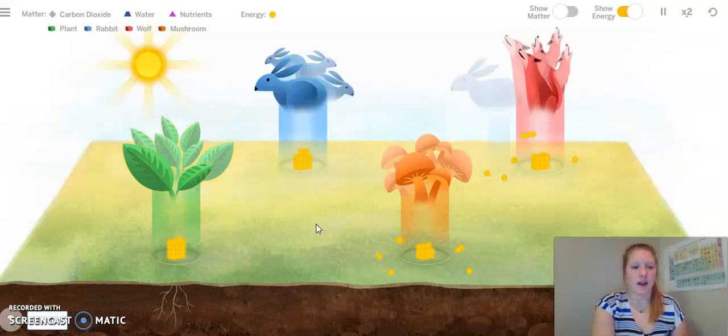So I'm noticing a lot of energy matter or food matter is going from the sun to the plants. I also just saw the food matter for the wolves go from the rabbits. And I'm also seeing that the plant food matter is going towards the rabbits. Let's go ahead and go back to our presentation.